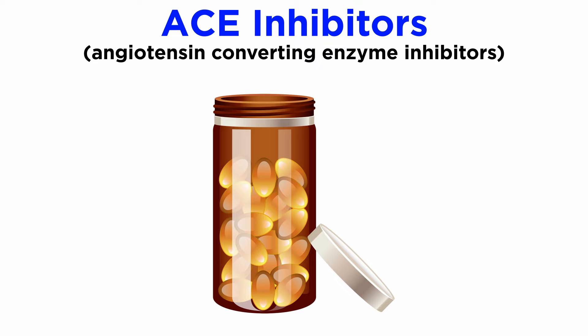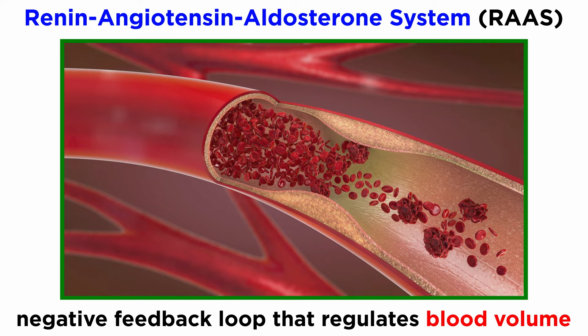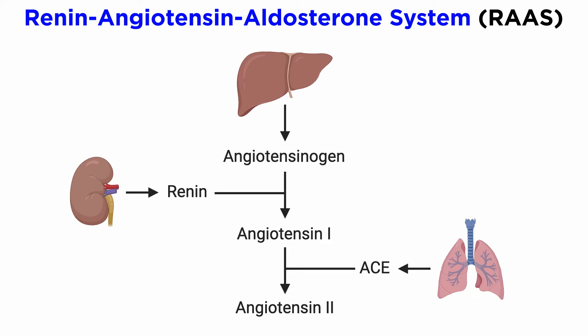Before we dive into the pharmacology of how ACE inhibitors decrease blood pressure, it's important to understand some aspects of the physiology at which ACE inhibitors mediate their effects. The renin-angiotensin-aldosterone system is a homeostatic negative feedback loop that regulates blood pressure by regulating the volume of fluid in your cardiovascular system. The RAAS mechanism can be thought of in steps, but keep in mind that practically all physiological processes are happening in dynamic equilibrium, and the influence of each step will depend on the homeostatic setpoint of the system as a whole.